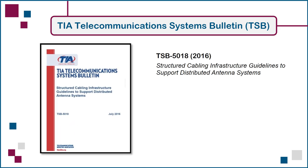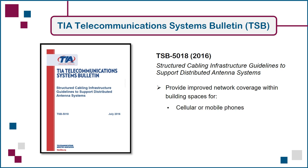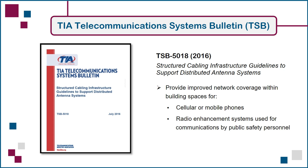TSB-5018 was issued in 2016 and provides cabling infrastructure design guidelines for distributed antenna systems. Such systems provide improved network coverage within building spaces for cellular or mobile phones, as well as for radio enhancement systems used by public safety personnel during emergency responses. Topics covered include wireless coverage assessments, active and passive antenna system topologies, and cabling media options.